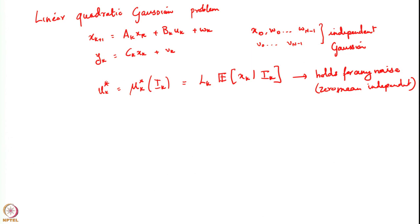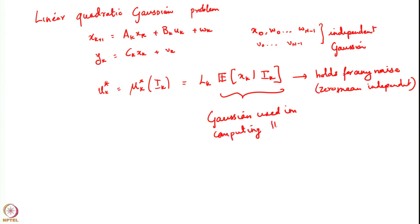We need the Gaussian assumption in order to compute this quantity efficiently. The Gaussian assumption is used in computing this conditional expectation efficiently or recursively. The implication of the Gaussian assumption is that this can be computed through the Kalman filter, which itself has a very nice recursive form that we discussed in the previous class.